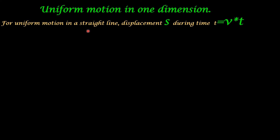In this video we will see how, for uniform motion in a straight line, the total displacement during time interval t is equal to its velocity multiplied by time taken for that displacement. In uniform motion, velocity will be uniform — that is, the object will be covering equal distances in equal intervals of time.